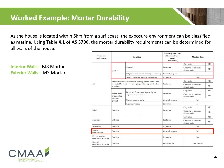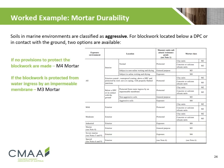Both interior and exterior walls shall use a minimum of M3 mortar. Soil in marine environments is classified as aggressive. For block work located below a DPC or in contact with the ground, two options are available. If no provisions to protect the block work are made, M4 mortar shall be used. If the block work is protected from water ingress by an impermeable membrane, M3 mortar shall be used.